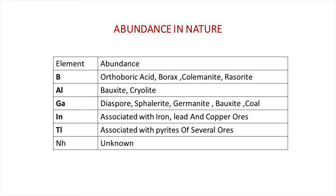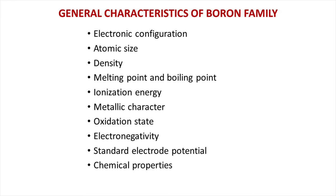The scientists who discovered the boron family members are shown in the table. These are the most abundant forms of boron family members in nature. Here we discuss some aspects of Group 13 elements. These include electronic configuration, atomic size, density, melting point, boiling point, ionization energy, metallic character, oxidation state, electronegativity, standard electrode potential, and chemical properties.